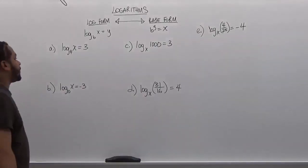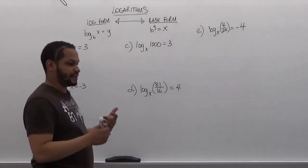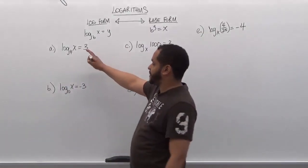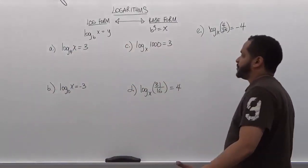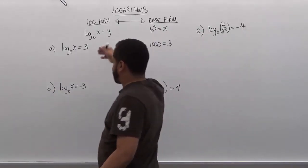Now here we have a series of five problems. The first problem has log base 4 of x is equivalent to 3, in which we're trying to solve for x, which is the term of the logarithm. To do this what we're going to do is we're going to use the base form by transforming this log form to base form.